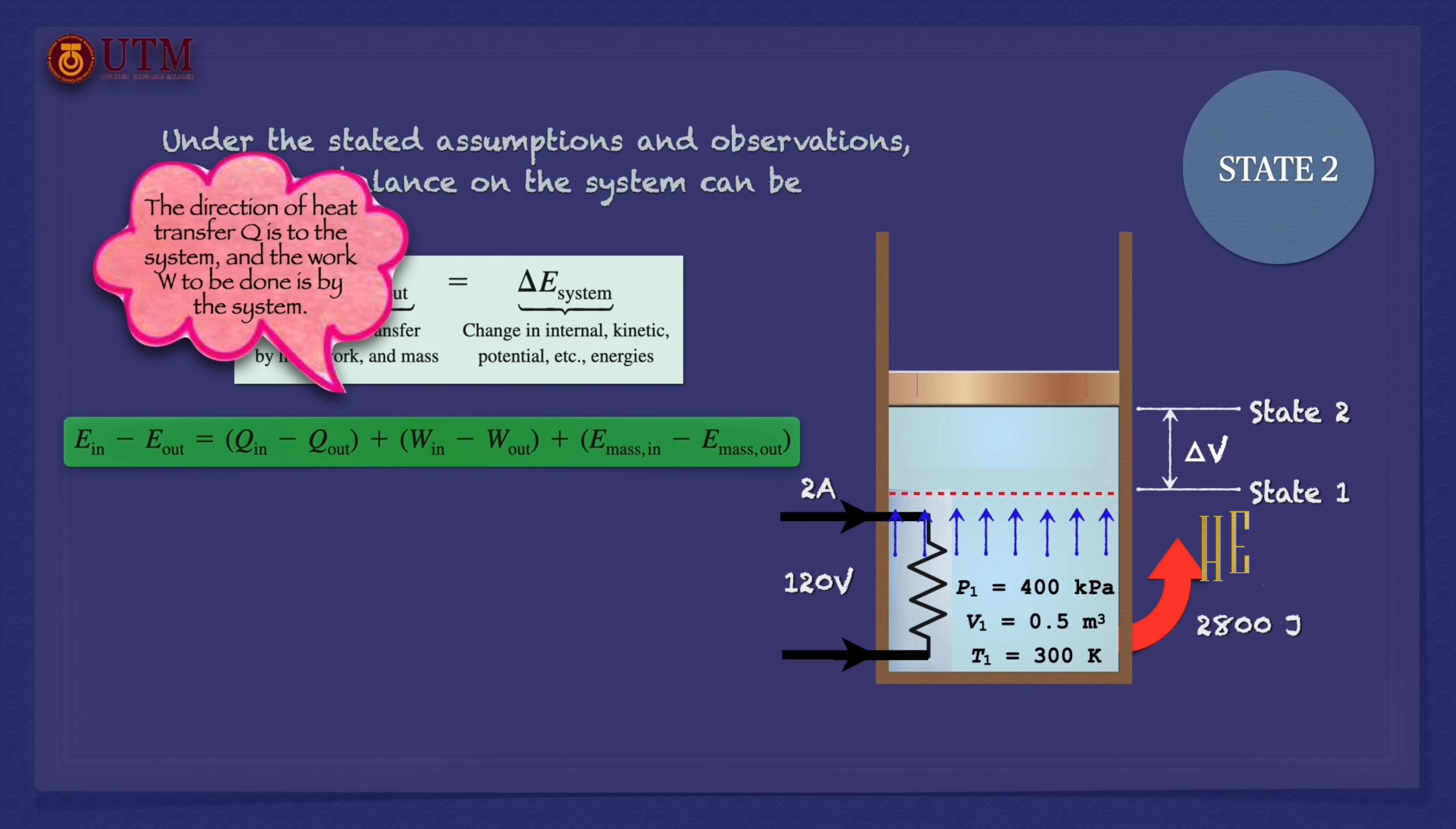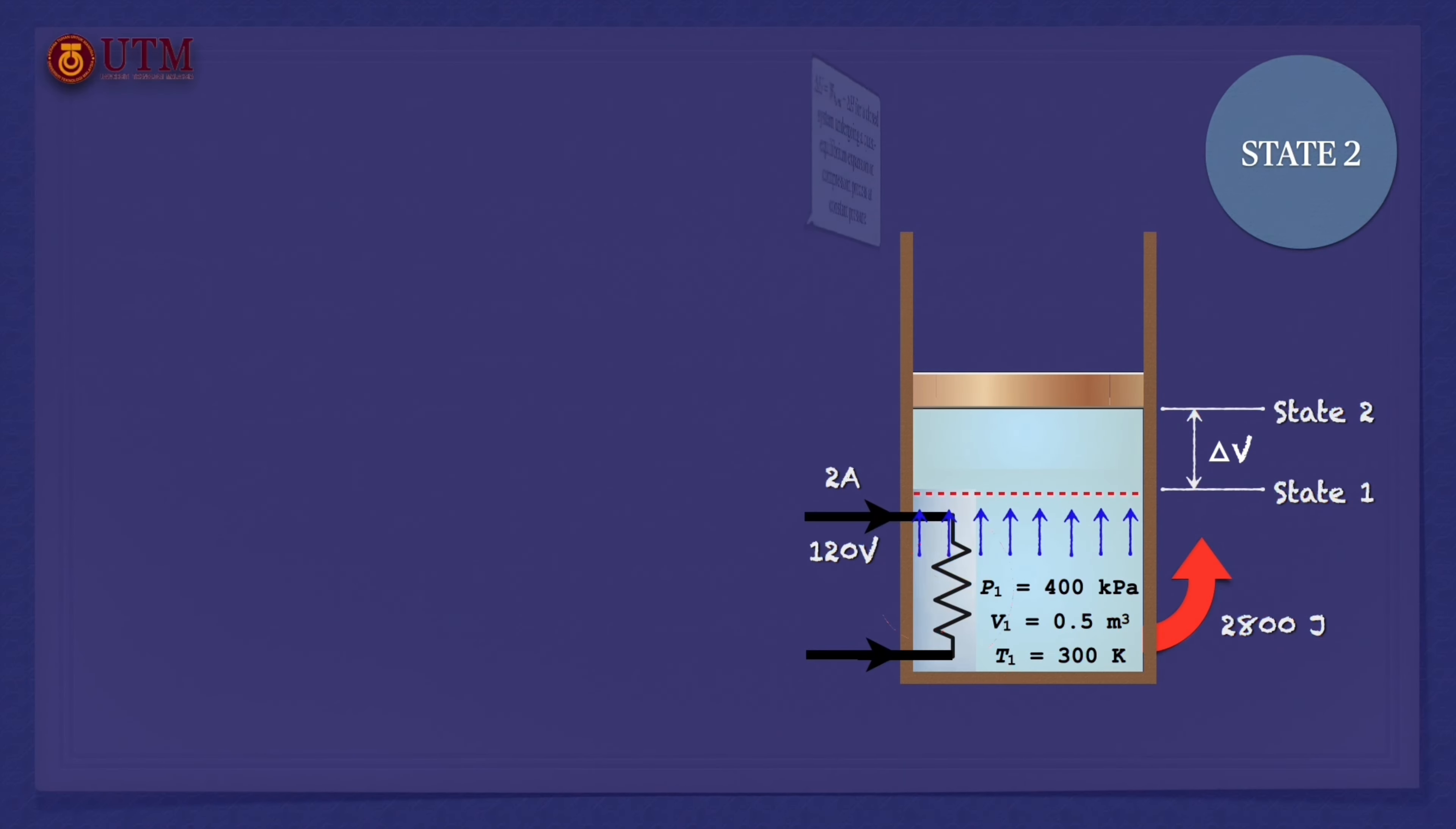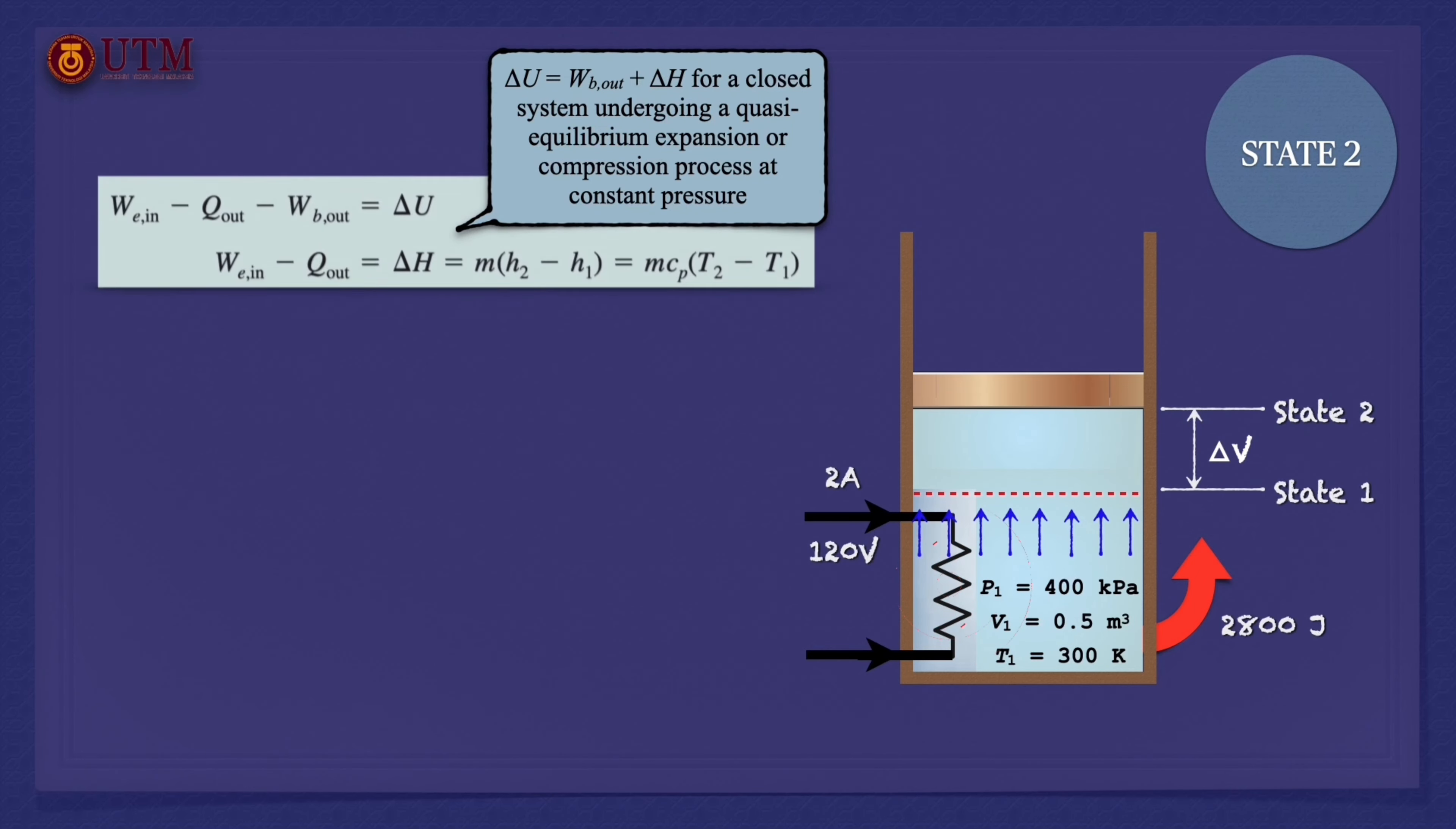The direction of heat transfer is specified to the system and the work to be done is by the system. The work interactions are the sum of boundary and electrical works. Since delta U equals W boundary plus delta H for a closed system undergoing a quasi-equilibrium expansion process at constant pressure, the energy balance equation reduces as follows.